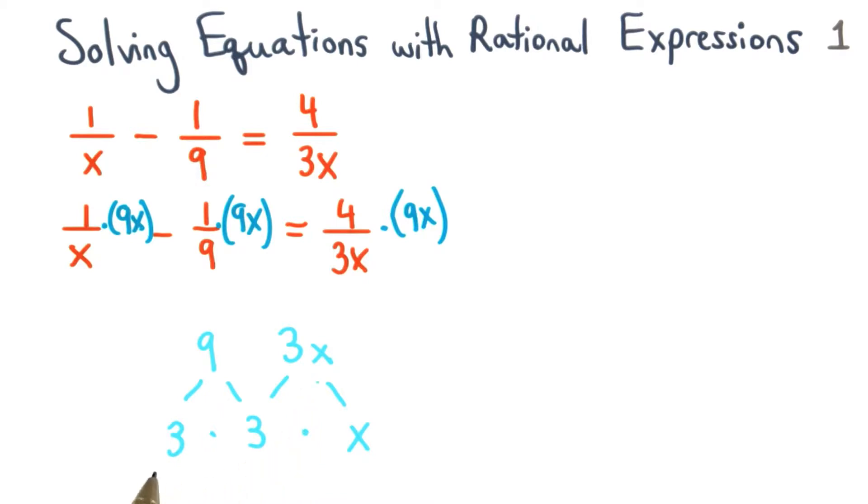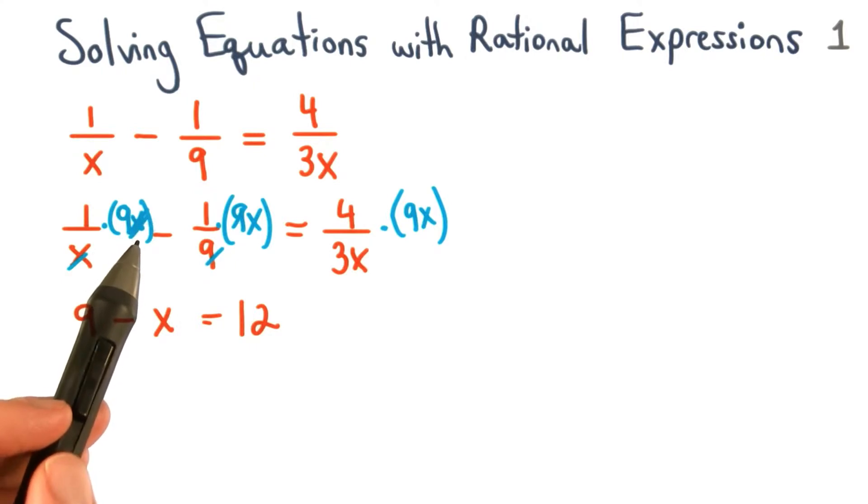When we use our factor tree method, we can see that we get a final product of 9x. In our first fraction, the x terms cancel to 1, leaving us with 9 times 1, or 9.